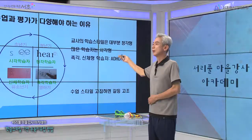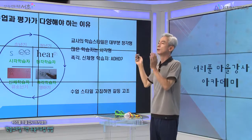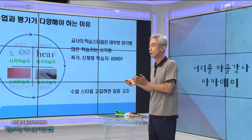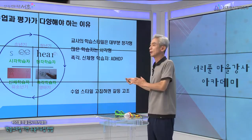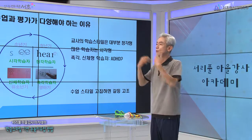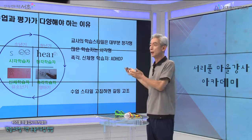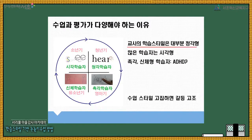청각학습자를 1·4분면에 둔 것은 가장 고등의 학습 스타일이기 때문입니다. 대학생 정도 돼야 완성되는 수준으로, 마을 선생님들이 학교에서 설명 위주로 수업하시면 좌절하기 쉽습니다. 초·중·고 학생들은 청각이 충분히 발달되지 않았기 때문입니다. 고등학생 정도는 시각학습, 초등학교·유치원 학생들은 신체학습 스타일에 가깝습니다.